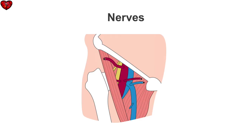The femoral nerve is another important structure to be aware of when looking with ultrasound to guide a femoral venous line. Remember the acronym NAVAL? It stands for nerve, artery, vein, empty space, and lymphatics — a way to remember what structures are lateral to medial in the groin.